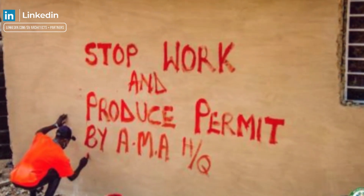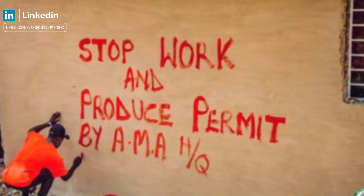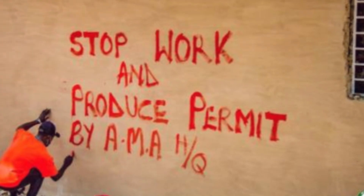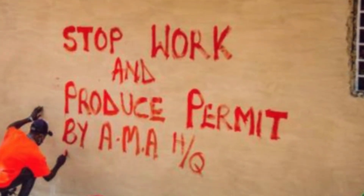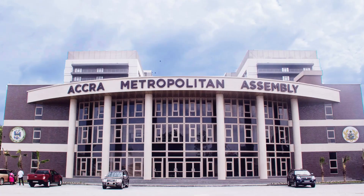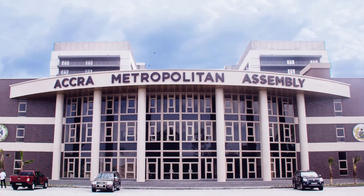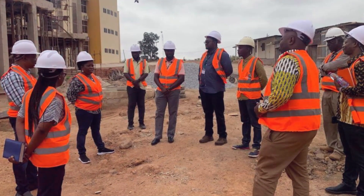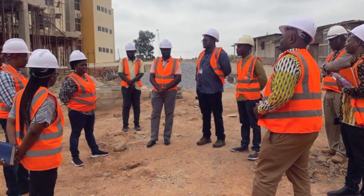That's why you see some buildings with the inscription 'Stop Work — Produce Permits' — simply because they decided to build without a building permit or without drawings. Get a drawing, send it to the assembly, and then you're free to proceed. Also worth noting: the electrical engineer, architect, and civil engineer all work as a team — once you get in touch with the architect, he comes on board with the entire team.